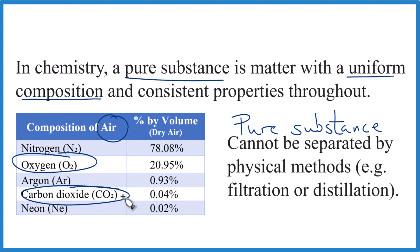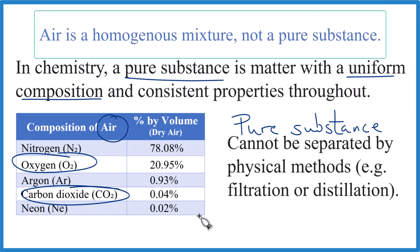Sometimes in engineering, air will be treated like a pure substance just to make the calculations easier. And it works pretty well. But in chemistry, we really don't consider air to be a pure substance. It's a mixture. And we say it's a homogenous mixture because it is consistent throughout. It has a uniform composition.